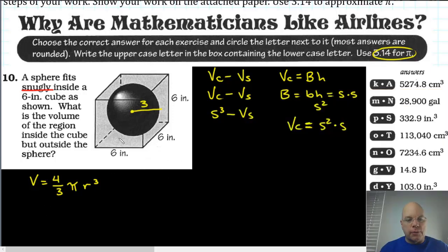Okay, substituting the radius into this formula for volume of a sphere, I get four-thirds multiplied by 3.14 multiplied by 3 cubed. Let me grab my calculator.